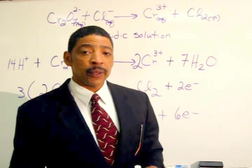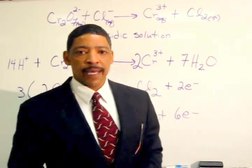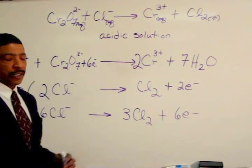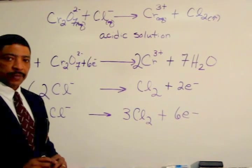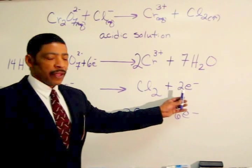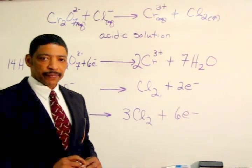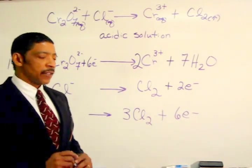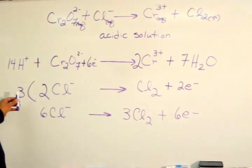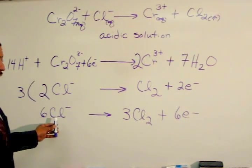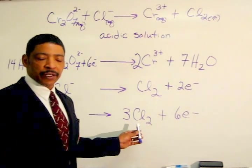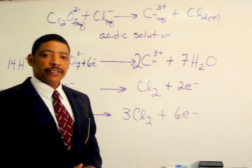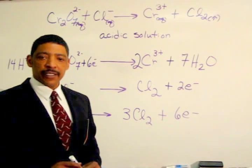Now the charge between the two half reactions must be balanced. In the first half reaction, there are six electrons on the left side. In the second half reaction, there are two electrons on the right side. Tripling the second half reaction gives three molecules of chlorine gas and now six electrons. Since the electrons are now balanced, the equation is balanced.